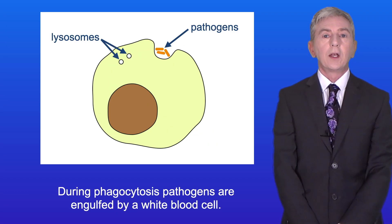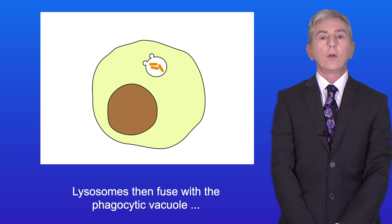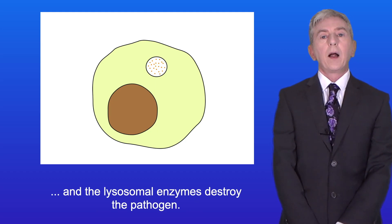During phagocytosis pathogens are engulfed by a white blood cell. In this case the pathogen is contained in a phagocytic vacuole. Lysosomes then fuse with the phagocytic vacuole and the lysosomal enzymes destroy the pathogen.